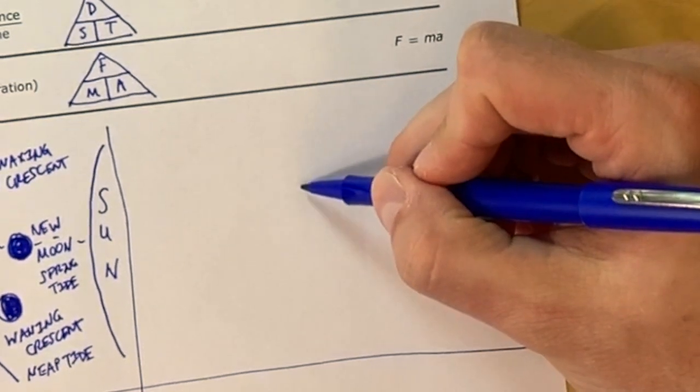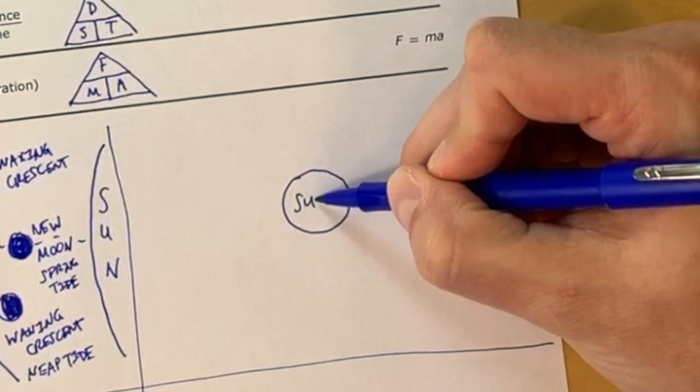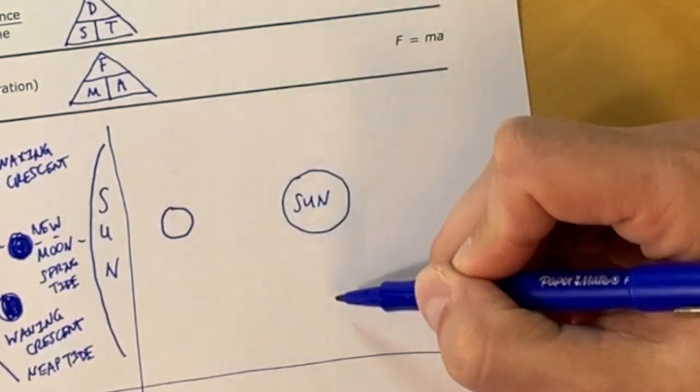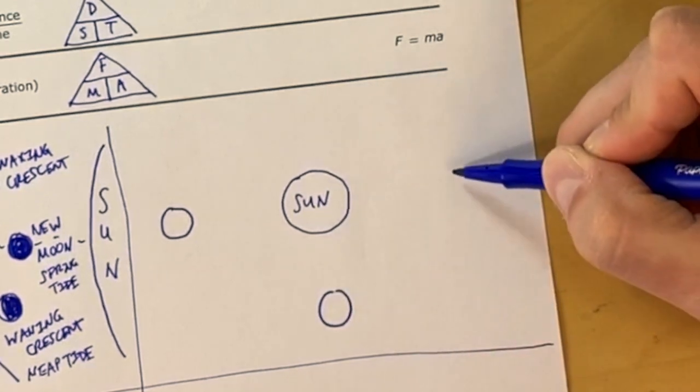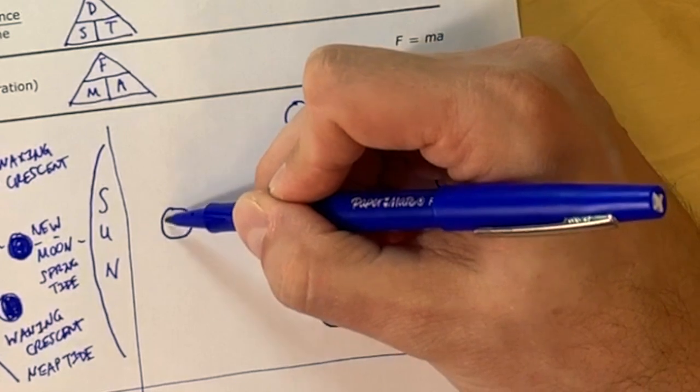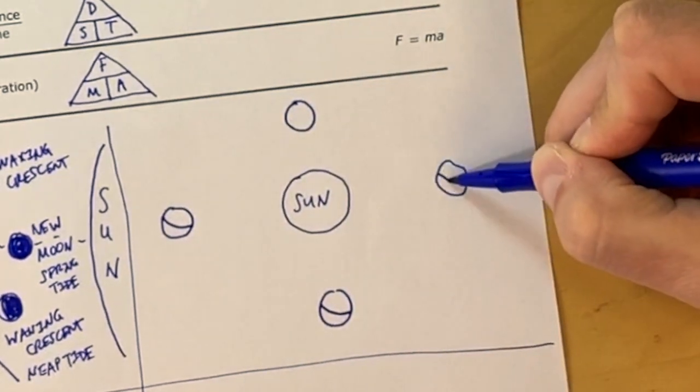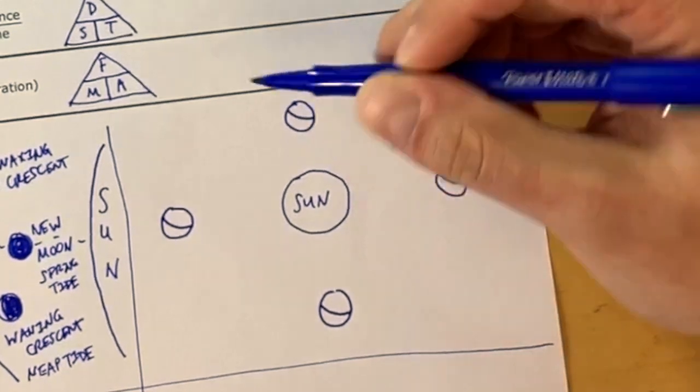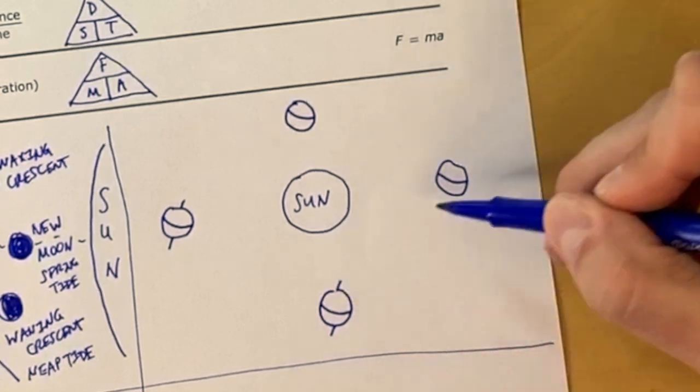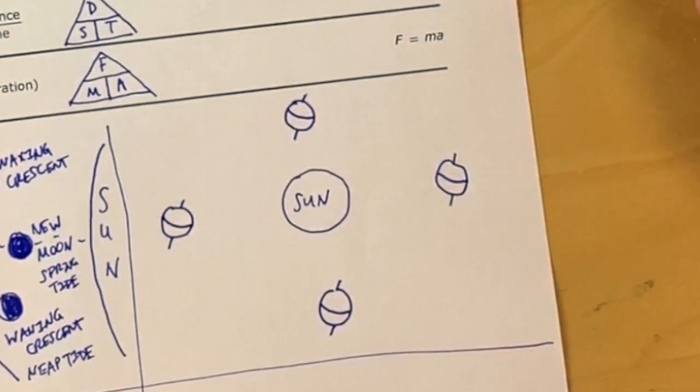We're going to now move into the top right quadrant where we're going to be working with a seasons diagram. We'll draw the sun in the middle and then four different earths around the sun to represent each of the four seasons. We want to be sure that we put the equator on all of the earths and that we have it at a tilt. We need to have the axis, which is the reason that we have seasons is because the earth is tilted. That's the reason we have seasons.